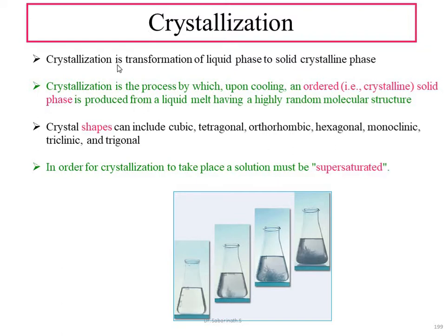Crystallization is the process by which, upon cooling or by reducing the temperature, an ordered crystalline solid phase is produced from a liquid melt having a highly random molecular structure. When temperature is reduced, a structured crystalline phase is produced from a liquid, and that process we call as crystallization. The crystal shapes which form with this process include cubic,